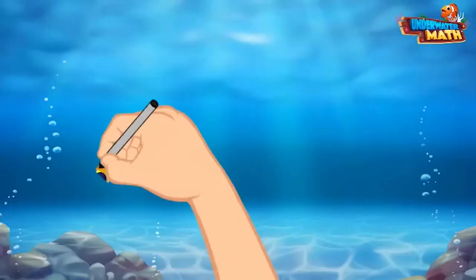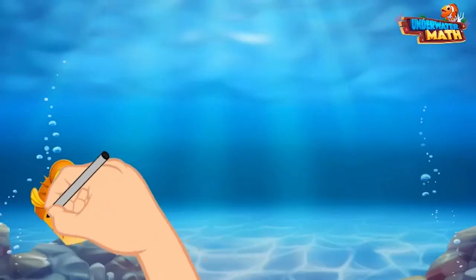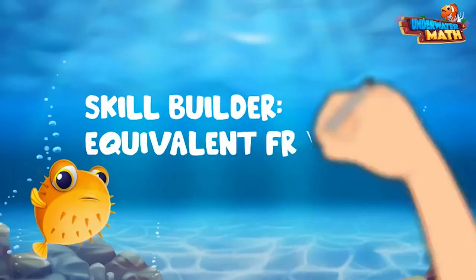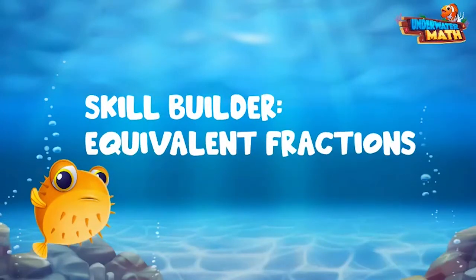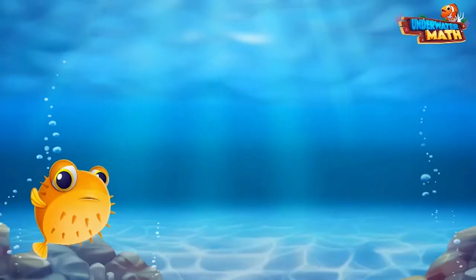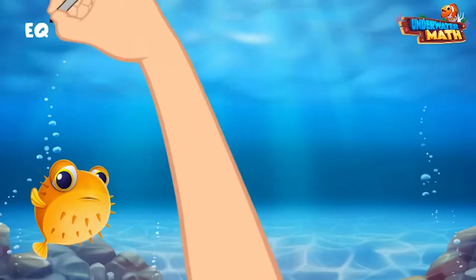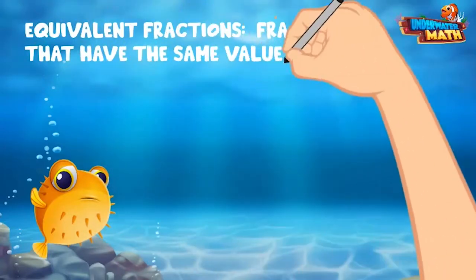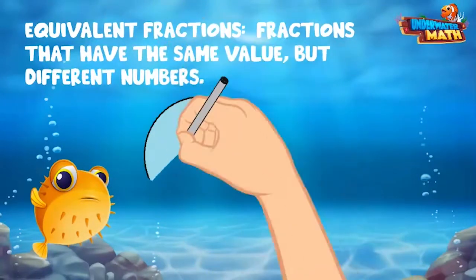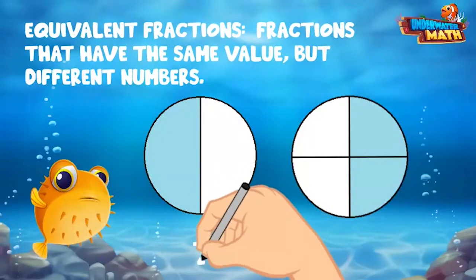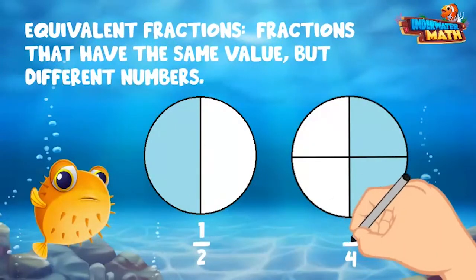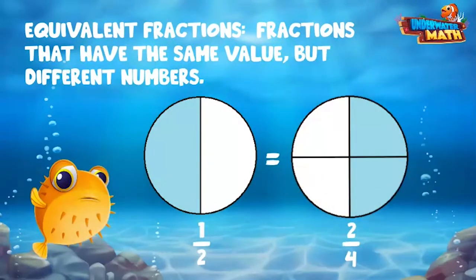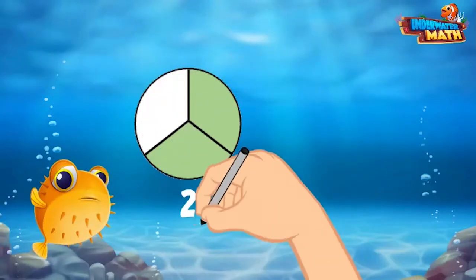Welcome back to Underwater Math. I'm Sir Puffington, and I am going to help you build your skills with equivalent fractions. First, let's make sure we know what equivalent fractions are. Equivalent fractions are fractions that have the same value but have different numbers. For example, two fourths and one half are equivalent because they cover the same amount of the model — they have different numbers but represent the same value.